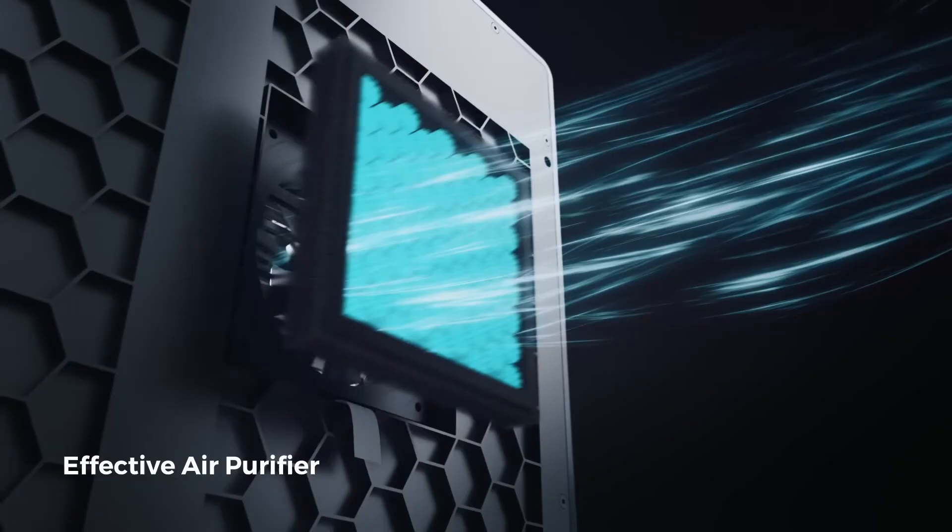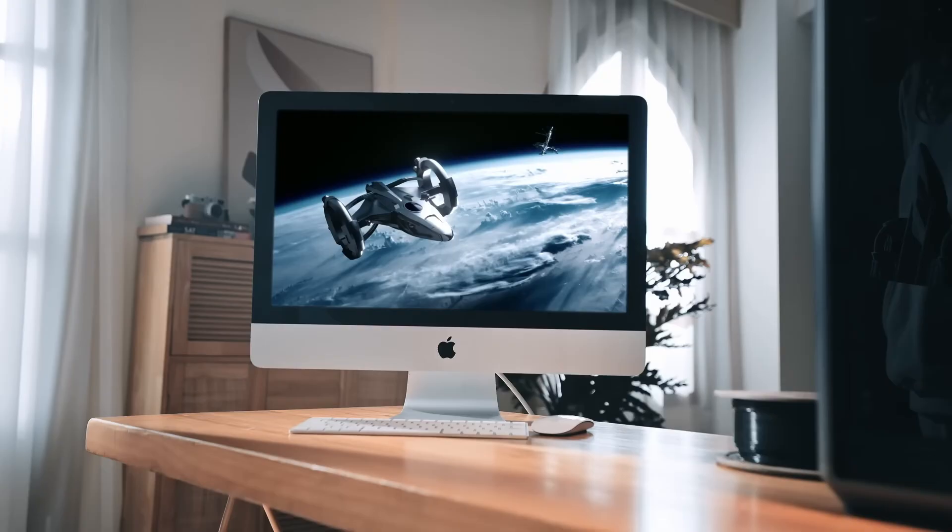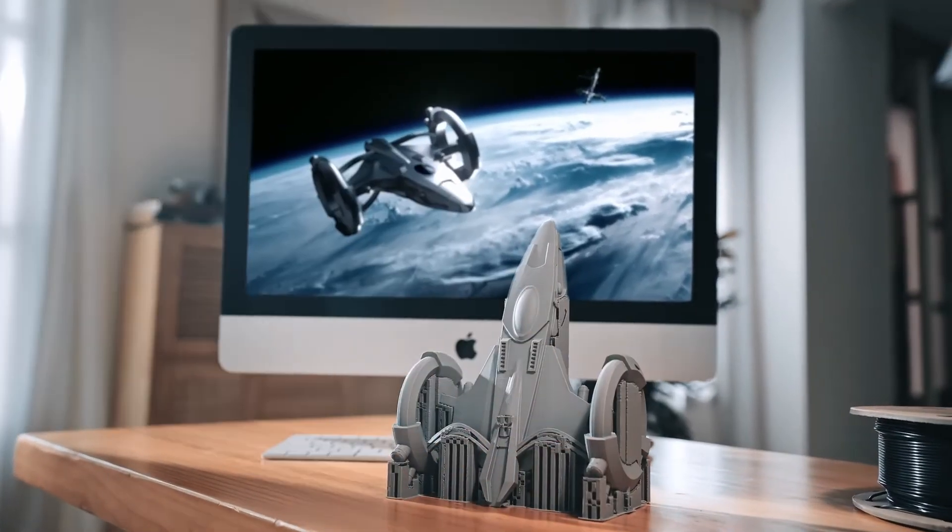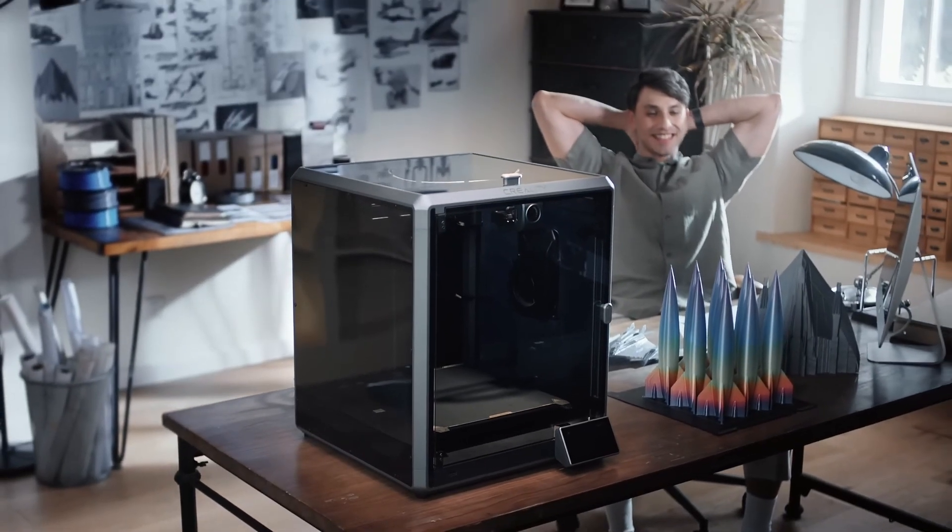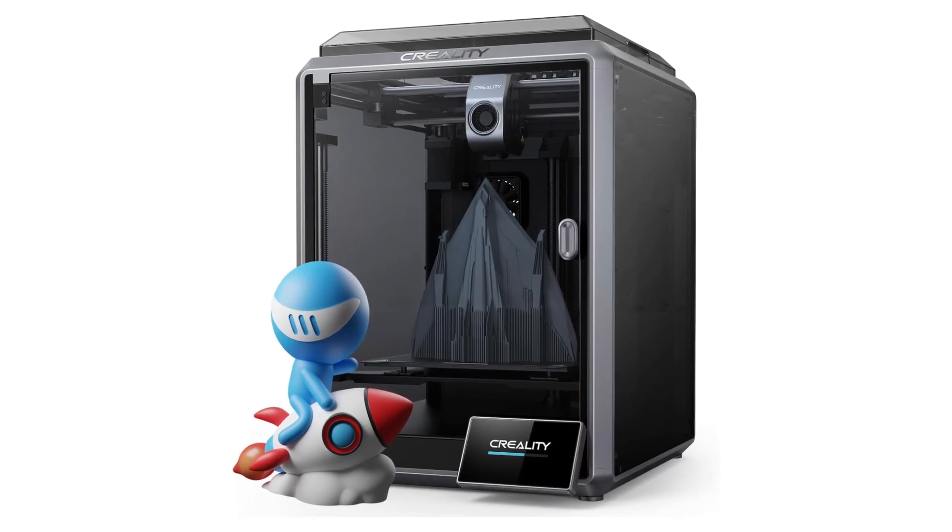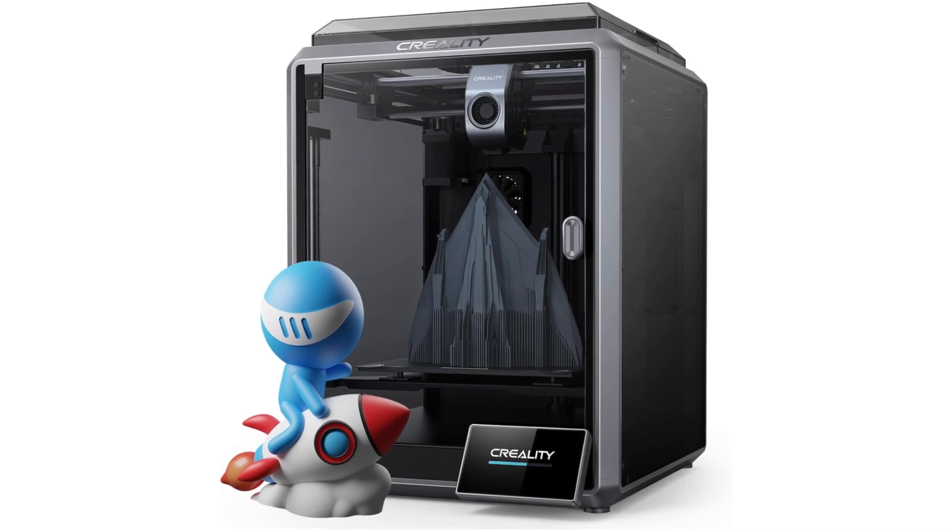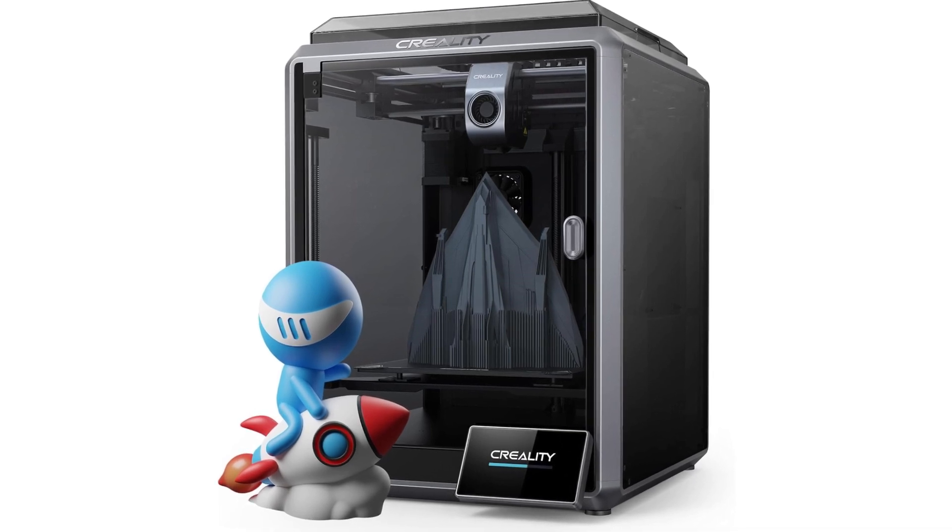To top it off, the G-sensor eliminates ringing by detecting vibrations and adjusting printing parameters, resulting in crisper, cleaner prints. This combination of speed, precision and innovation makes the Creality K1 a top choice for any 3D printing enthusiast.